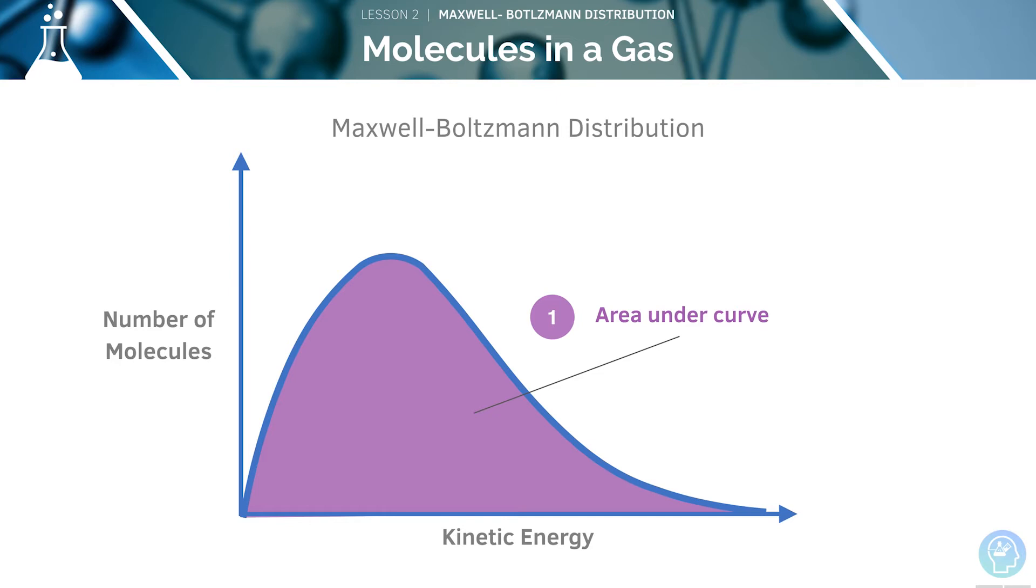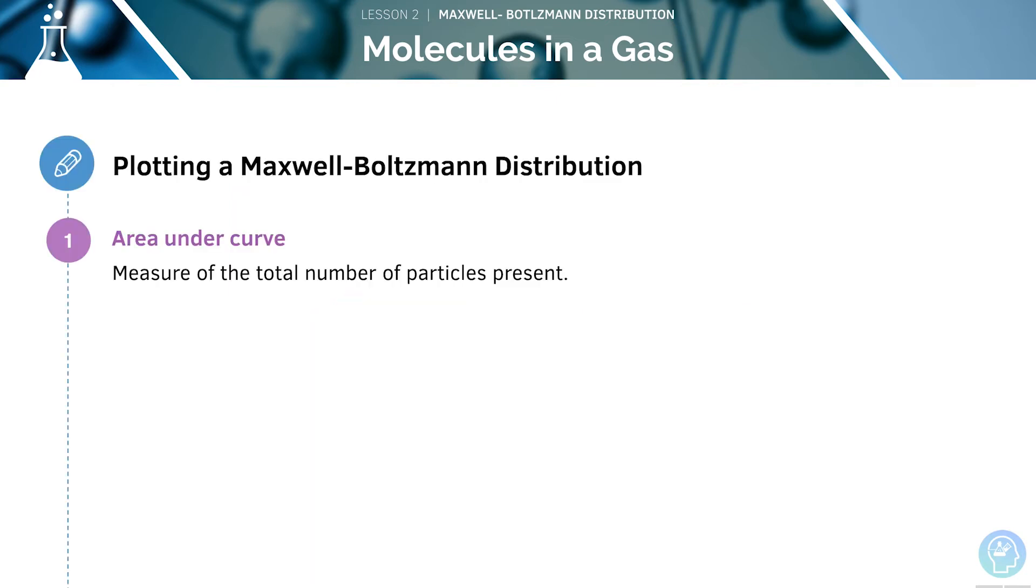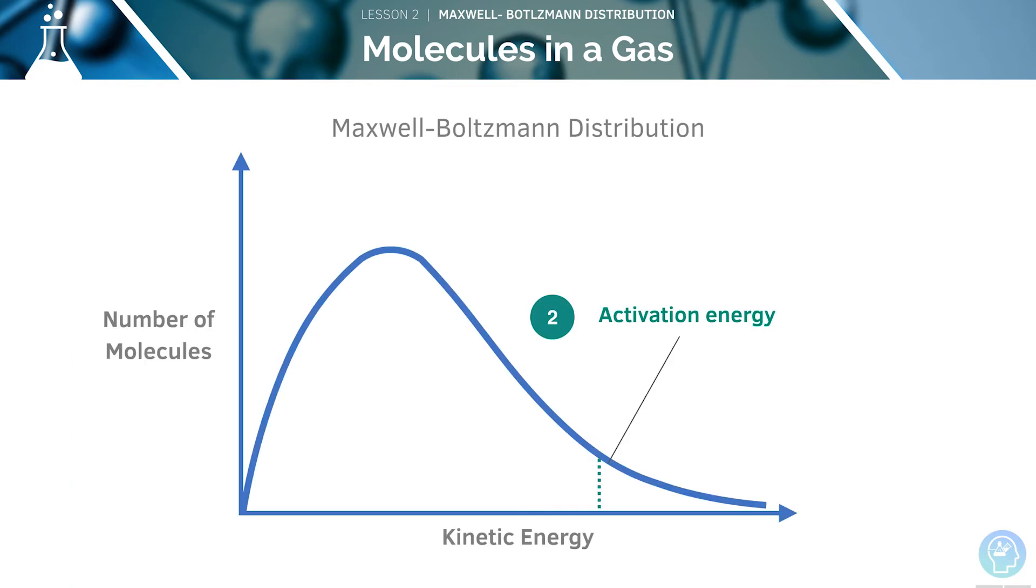The area under the curve is a measure of the total number of particles present. A dotted or straight line such as this one is used to represent activation energy.